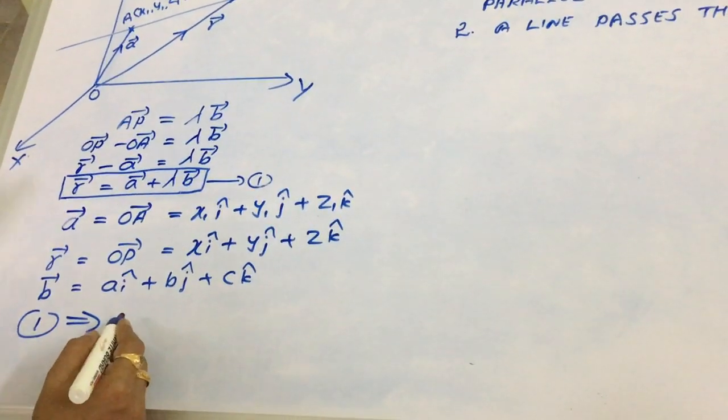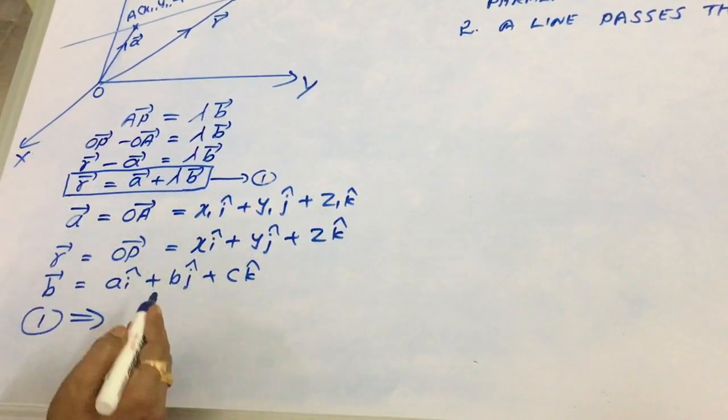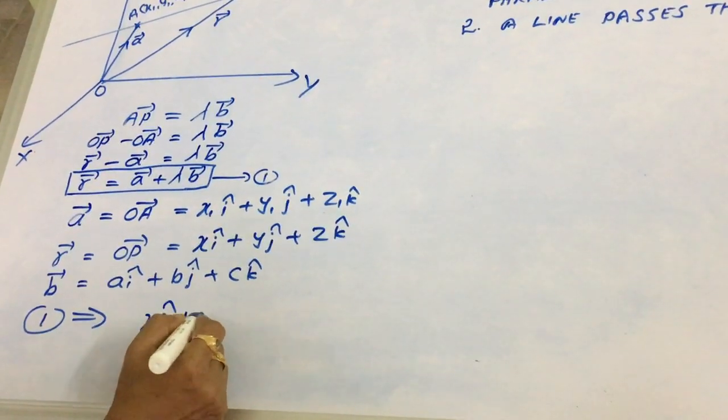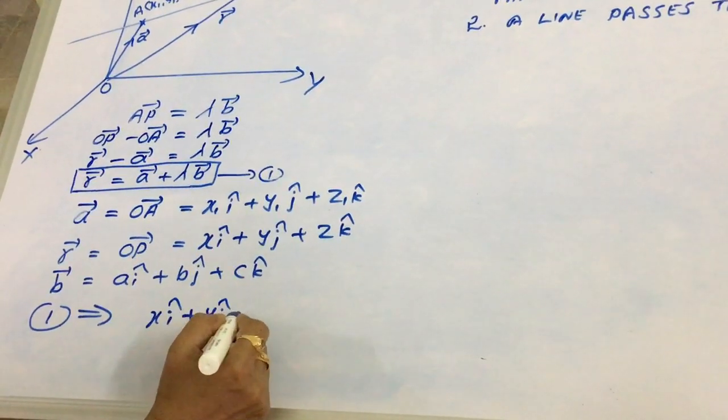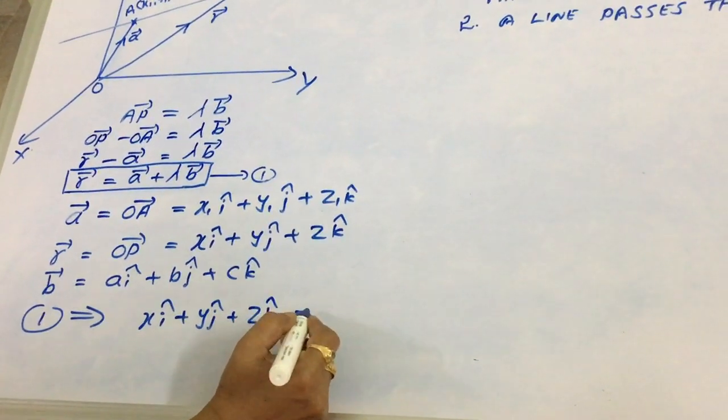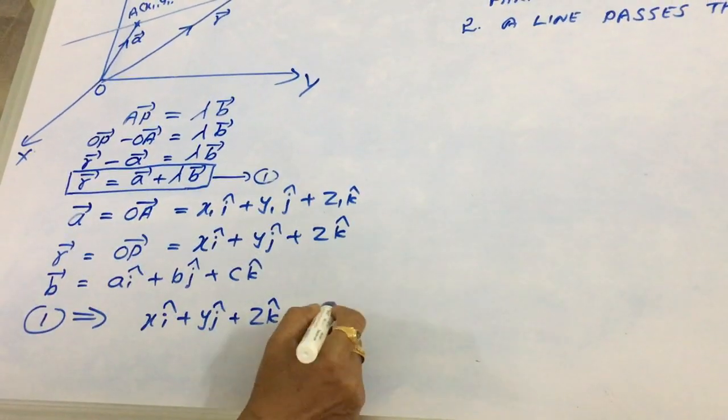we get vector R equal to x i-cap plus y j-cap plus z k-cap equal to vector A.